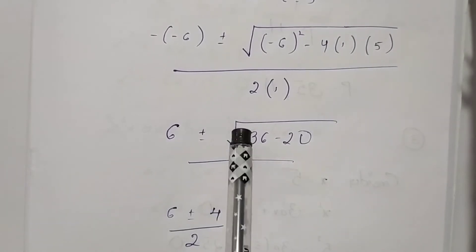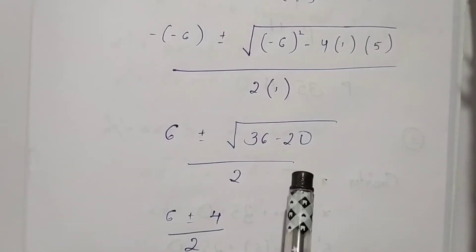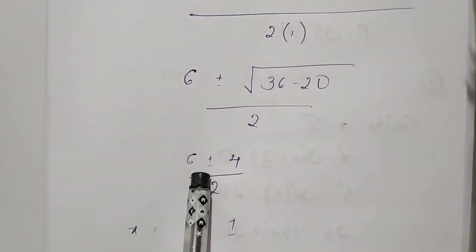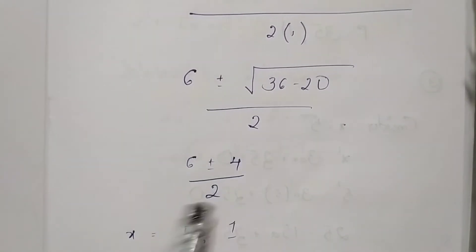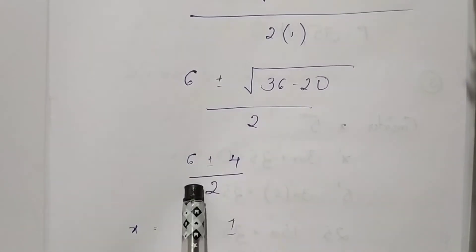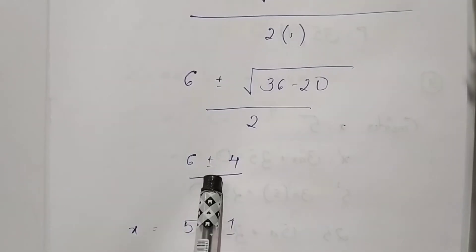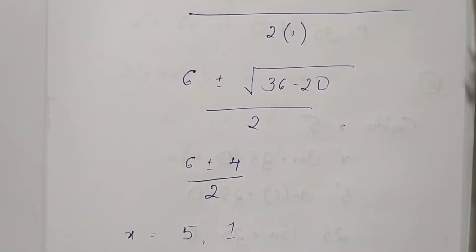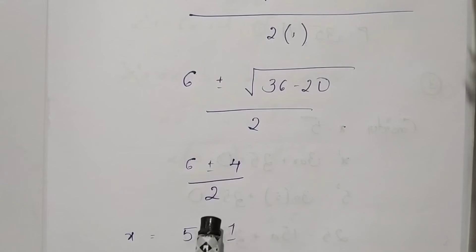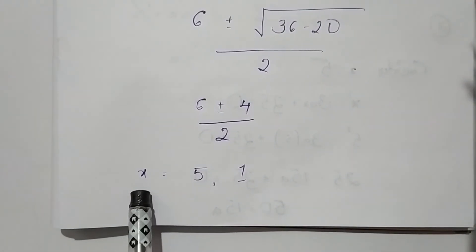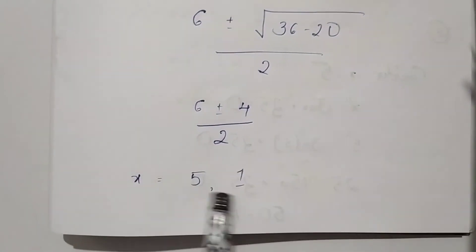So we get square root of 16, which is 4. Therefore we get two roots: 6 plus 4 divided by 2, which is 10 by 2 equals 5, and 6 minus 4 divided by 2, which is 2 by 2 equals 1. Therefore the two values of x are 5 and 1.